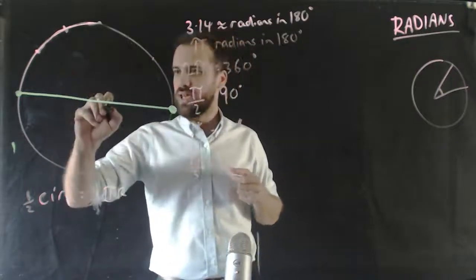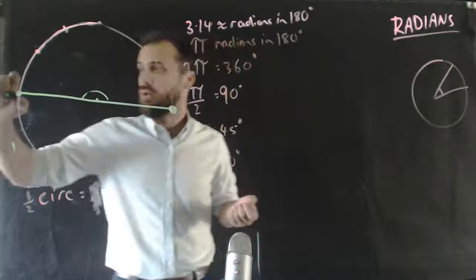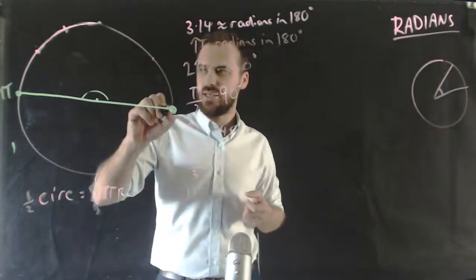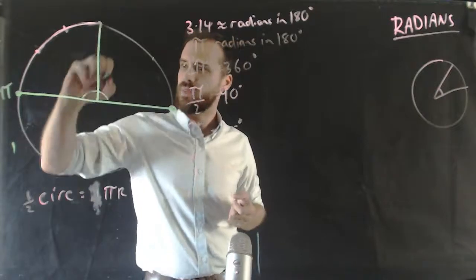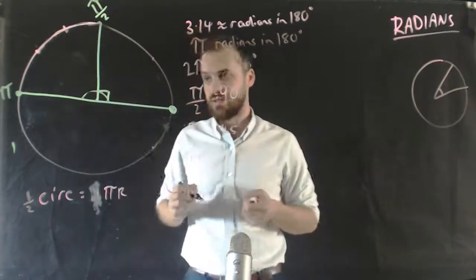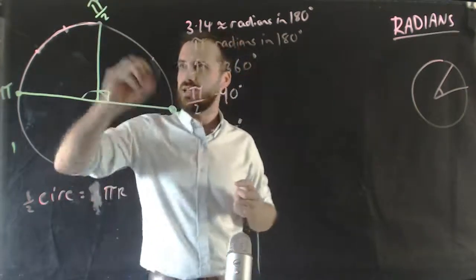then this angle is 180 degrees, or pi radians. If I start here, this angle is pi on 2 radians. If I start here,